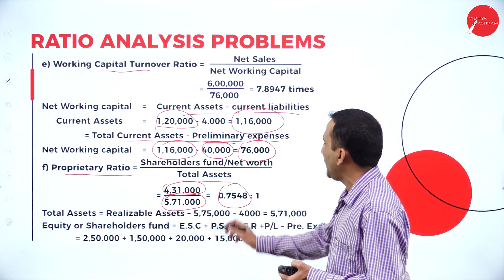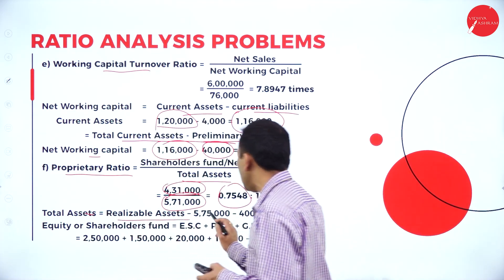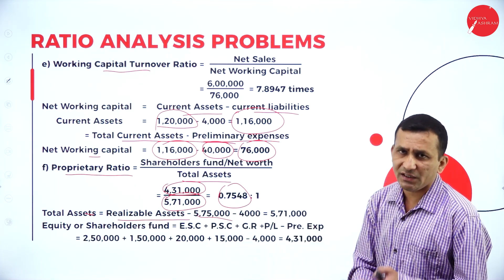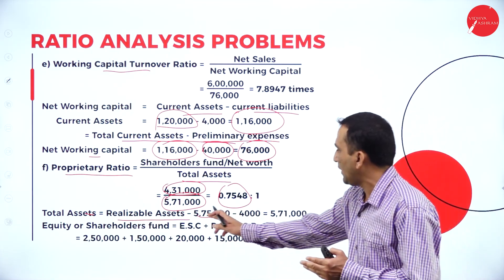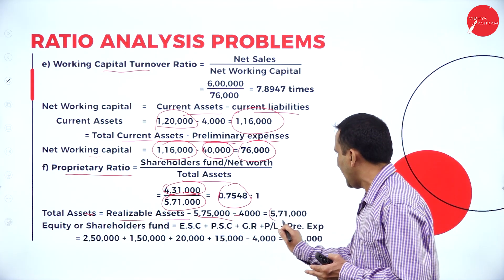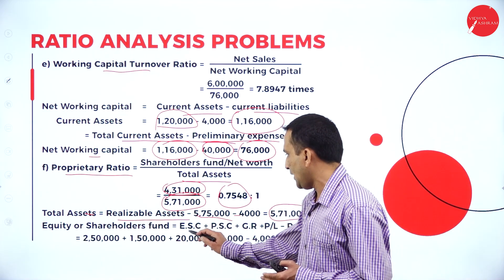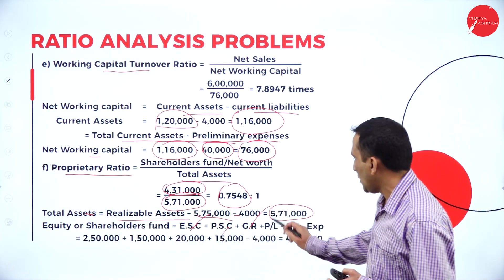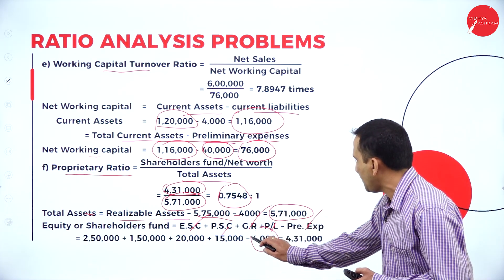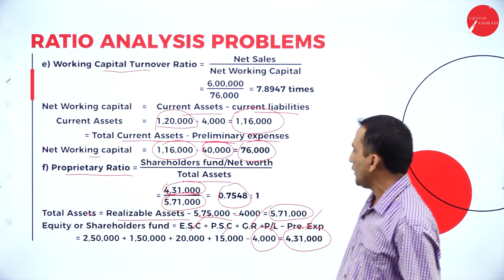The total assets: balance sheet total is 5,75,000; subtract 4,000 preliminary expense, giving net total assets of 5,71,000. Shareholders' fund: equity shares, preference shares, general reserve, and profit and loss — minus preliminary expense 4,000 — finally gives 4,31,000.